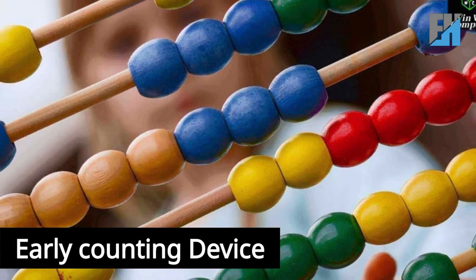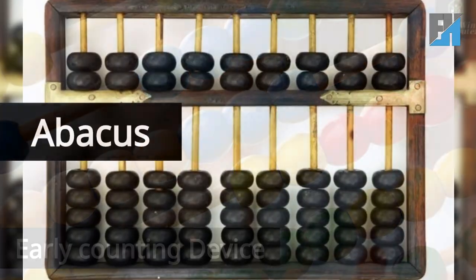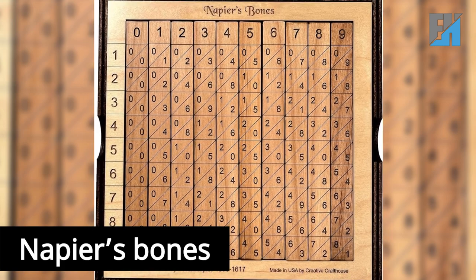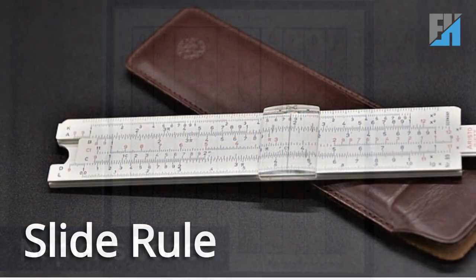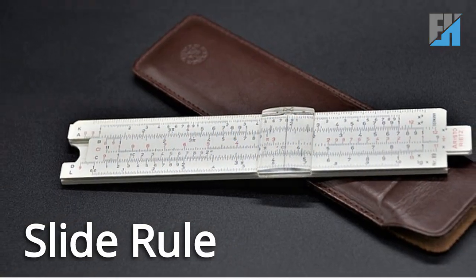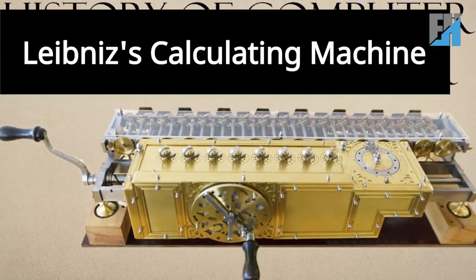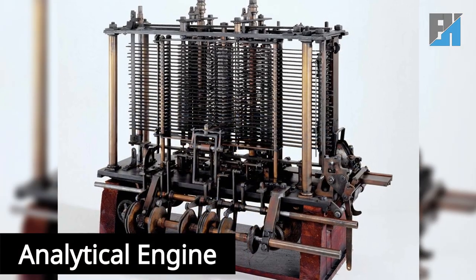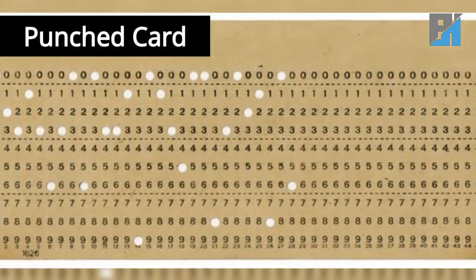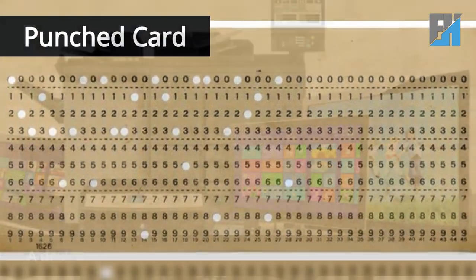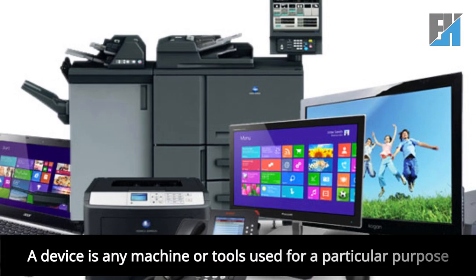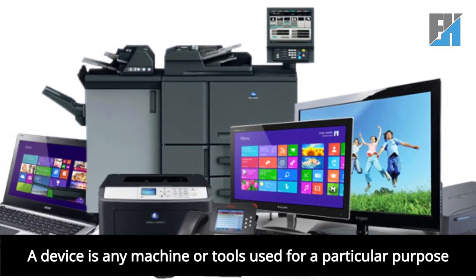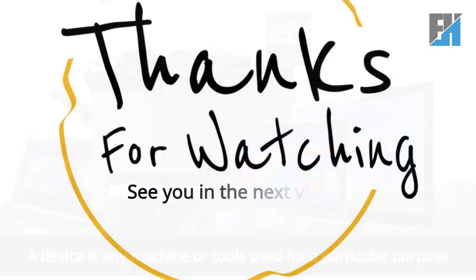Early Counting Devices: Abacus, Napier's Bones, Slide Rule, Leibniz's Calculating Machine, Analytical Engine, and Punched Card. A device is any machine or tool used for a particular purpose.